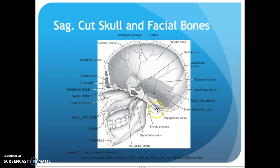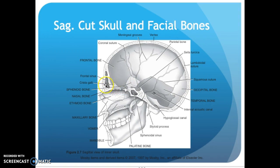Hypoglossal canal right there — it's in your occipital bone. Your styloid process, sphenoidal sinus, palatine bone right there, mandible, your vomer, maxillary bone, ethmoid, nasal bone. Coming across here's your sphenoid — a section of it. Crista galli — the part that sticks up — frontal sinus, and your frontal bone with your coronal suture coming down the side.